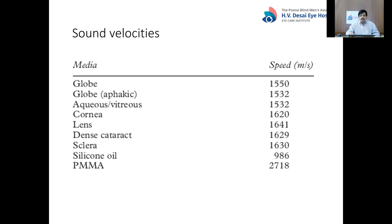The cornea has a speed of 1620 meters per second, but being very thin at only 500 microns, it is not taken into consideration during calculation. The lens has a speed of 1641 meters per second; however, depending on the grade of cataract, this may differ — a dense cataract may have a slightly slower speed of 1629. The sclera is around 1630 meters per second. Silicone oil slows sound to 986–1040 meters per second, and IOL materials like PMMA have a speed of 2718 meters per second.